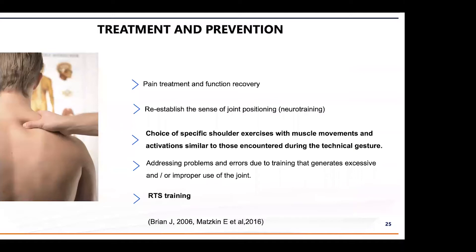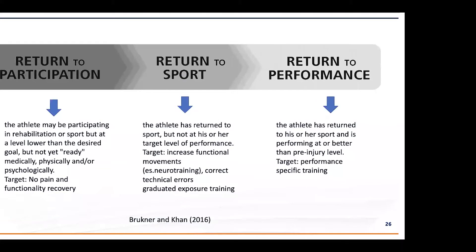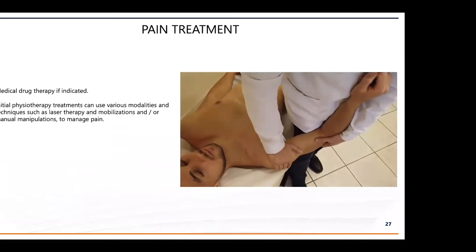For treatment, we start with pain treatment and functional recovery, then choose specific shoulder exercises, and finally do return-to-sport training. We can divide this into three phases: return to participation, where the target is no pain and functional recovery; return to sport, where the target is increased functional movement, correcting technical errors, and sport-specific training; and return to performance, where the target is performance-specific training. This progression is very important for our athlete.